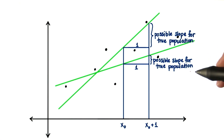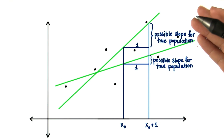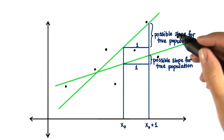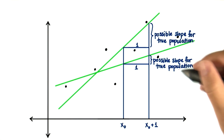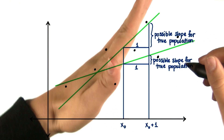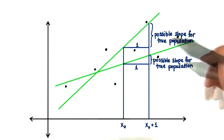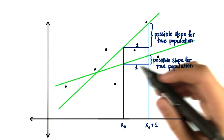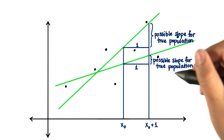Similarly, we might want a confidence interval for the true slope. We'll have a certain regression line, and we'll have calculated the slope for that regression line based on our sample data. The slope could be this, or flatter down to here. A confidence interval for slope can tell us the range for which the true population slope might be.